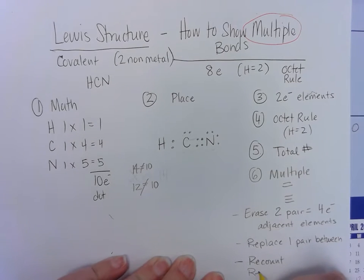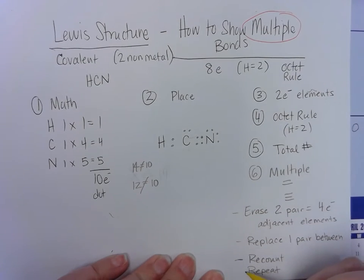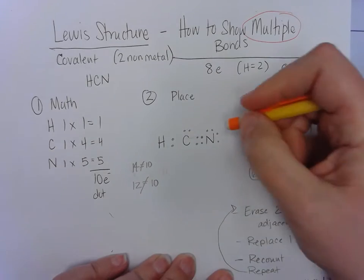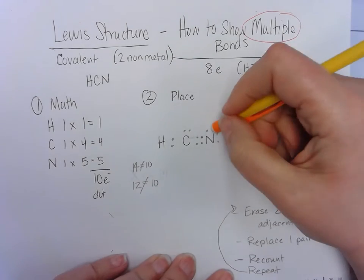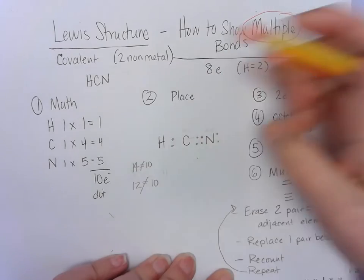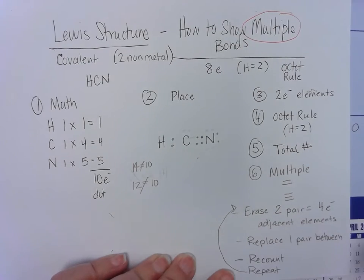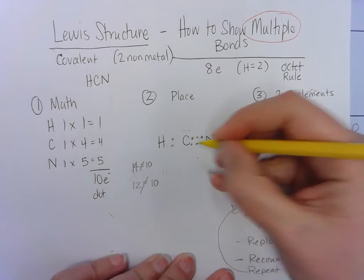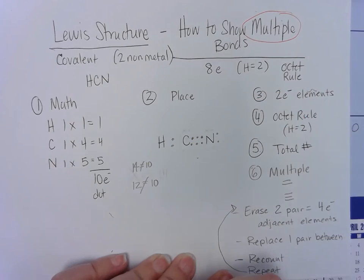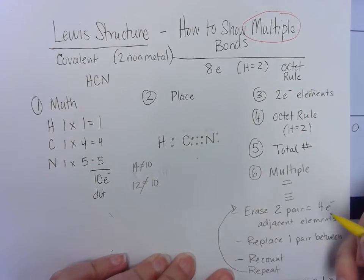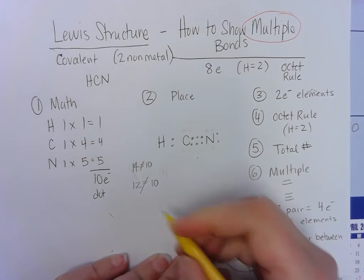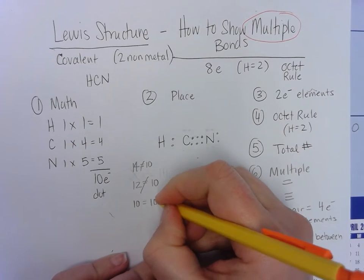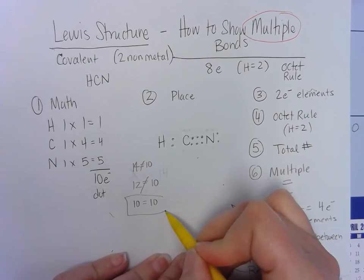Sometimes you have to repeat as needed. Okay? So we're going to go back up to here and continue working. I'm going to erase another two pair. I'm going to take a two pair here, and here are my two pair. And they have to be adjacent. I erased, and now I need to replace them in between the two elements where I took them from. Now I'm going to count my whole picture. Two, four, six, eight, ten. Ten is ten. Good. We're finally where we need to be.